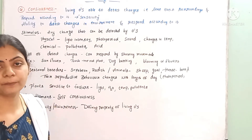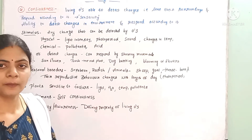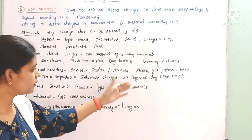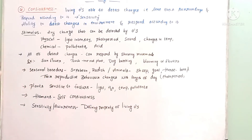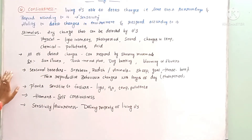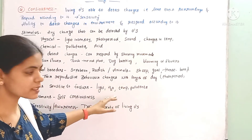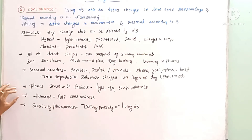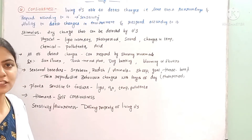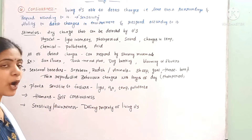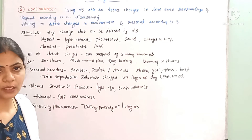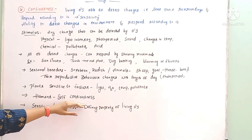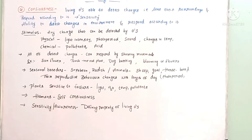Some plants and animals are seasonal breeders — some breed in summer, some in the rainy season, and some in autumn. Examples include soybean, radish, and animals like sheep, goat, and horse. Their reproductive ability changes according to the length of the day, called photoperiod. Plants are sensitive to external factors like light, temperature, water, and pollutants. Among all living organisms, the most highly conscious organism is the human being.